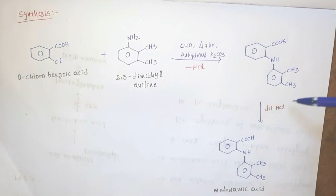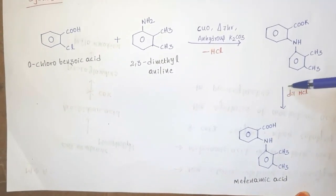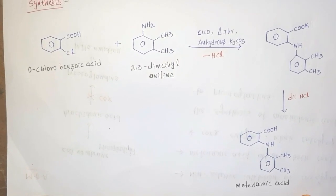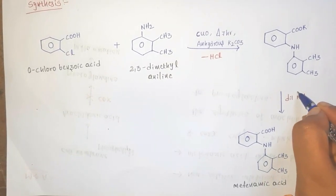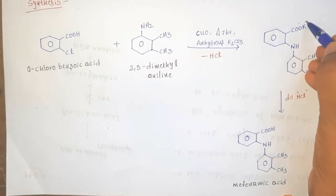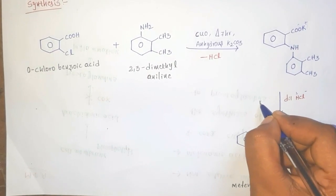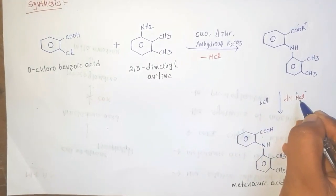So this intermediate compound upon reaction with dilute HCl, H+ and Cl-, this COO- and K+, this K+ and Cl eliminates as KCl, and directly this H+ attacks COO- and forms COOH.